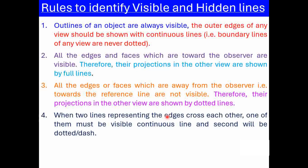Rule number 4: When two lines representing edges cross each other, one of them must be a visible continuous line and the second will be a dotted or dashed line. When two lines are intersecting in a particular view, one will be completely visible and the second will be invisible.